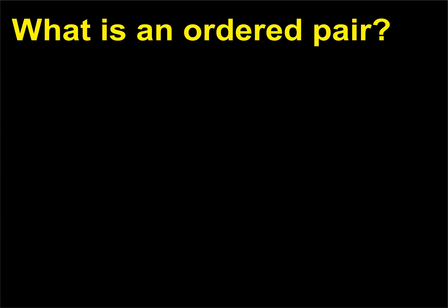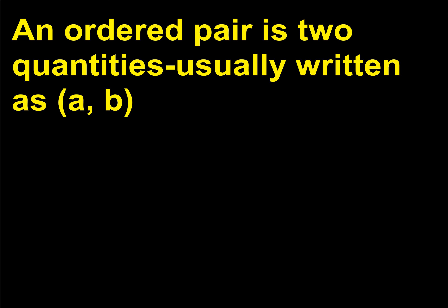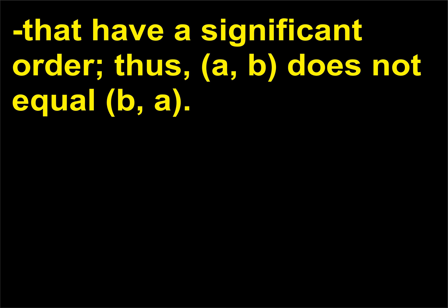What is an ordered pair? An ordered pair is two quantities, usually written as (A, B), that have a significant order. Thus, (A, B) does not equal (B, A).